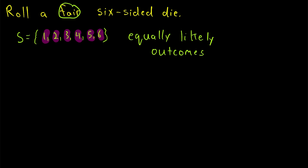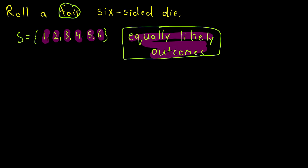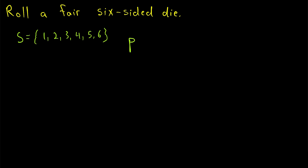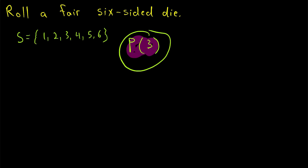In today's Wrath of Math lesson, we'll talk a bit about probabilities involving experiments that have equally likely outcomes, like rolling a die or flipping a coin. These are some of the first examples we'll typically study in probability theory. A quick question we might ask about this experiment is: what is the probability that we roll a 3, which we could denote as P of 3?